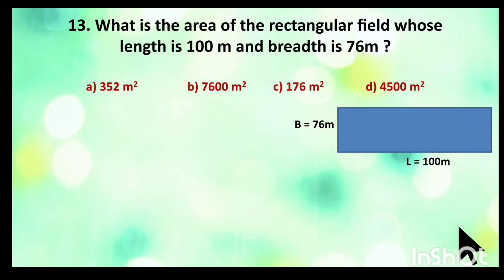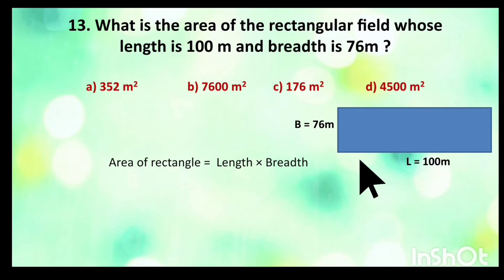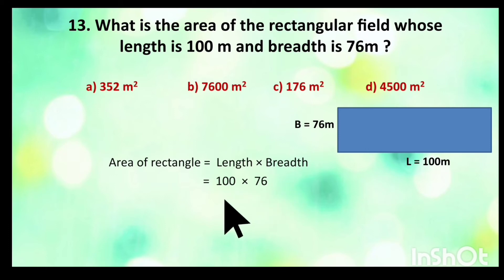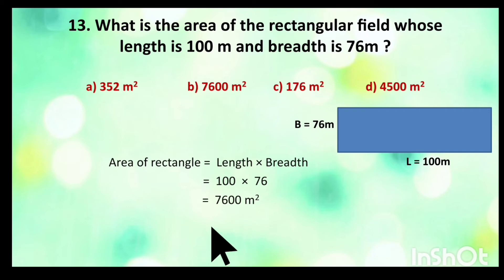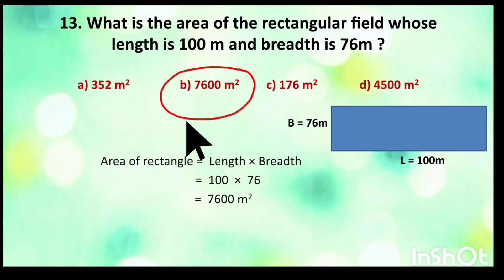We have learnt the formula: area of a rectangle is equal to length into breadth. So we multiply the given length with the given breadth — that is 100 meters into 76 meters. Area of rectangle equals length into breadth, so 100 into 76 gives us 7600 square meters. So the area of the rectangular field is 7600 square meters. The right answer is 7600 square meters.